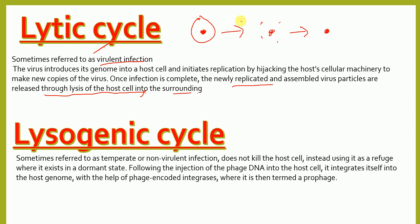The newly formed virus particles are released after the lysis of the cell. That is why this cycle is called the lytic cycle — because here the lysis of the cell happens. Now let's look at the lysogenic cycle.